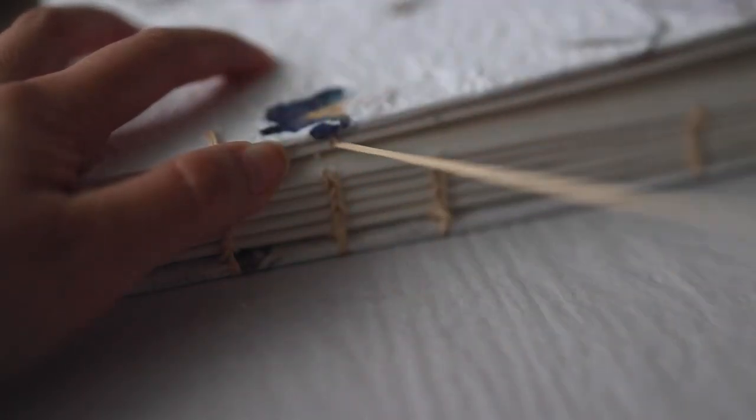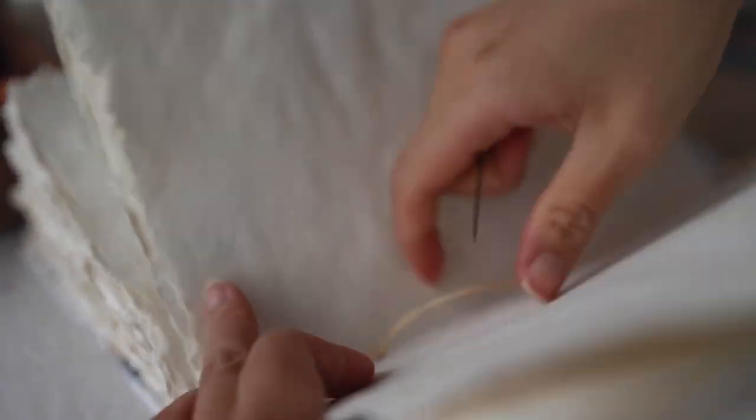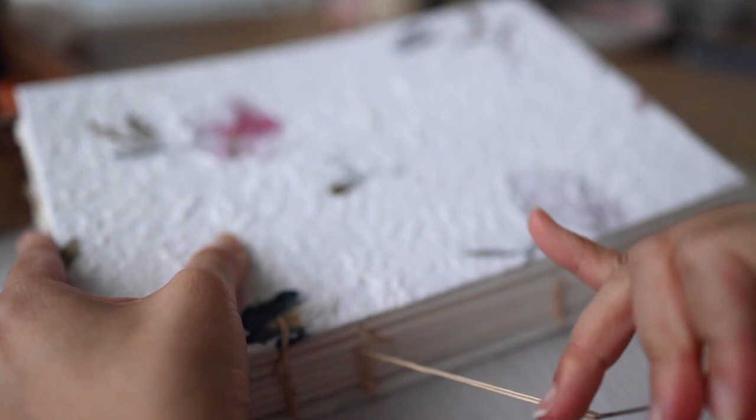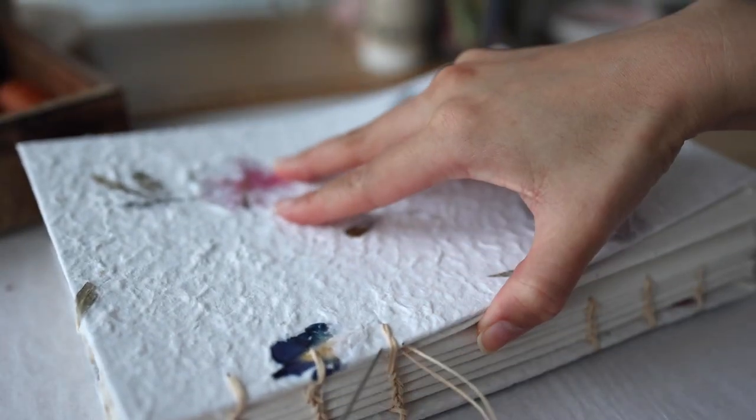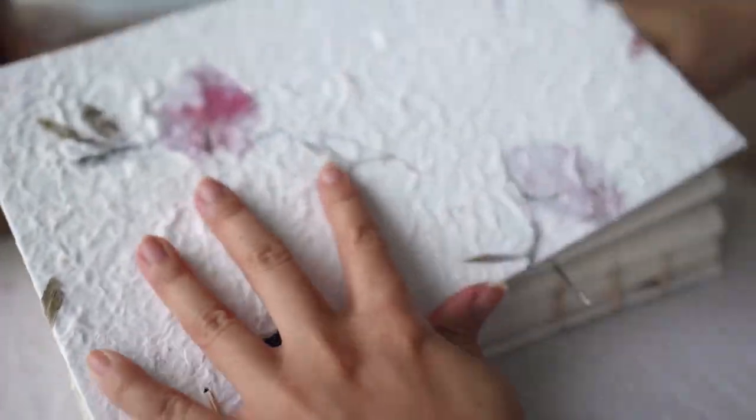Now onto the next hole, and you'll do that whole sequence again. I hope my video helps, even if my explanation didn't, but you'll get it. Just through the signature, loop it, then through the cover, loop it again, and then back through the signature. Now repeat all the way to the end.